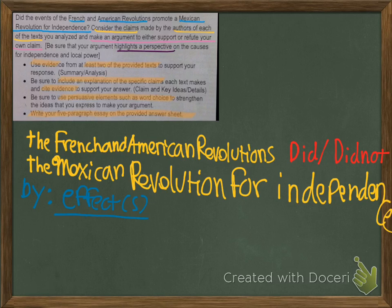The prompt says to use evidence from at least two of the provided texts to support the claim. If there's disagreement about whether the French and American revolutions promoted the Mexican revolution, I'll use texts that disagree as counter-argument and try to discredit those sources or explain why they don't fit my answer. Alternatively, if I argue they did not promote it, I'll need to discredit any sources showing they are related. Either way, I'll address the whole body of evidence and definitely use at least two sources.